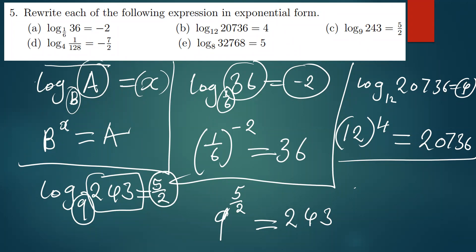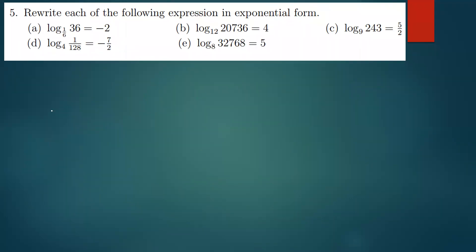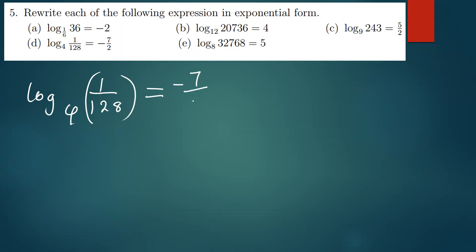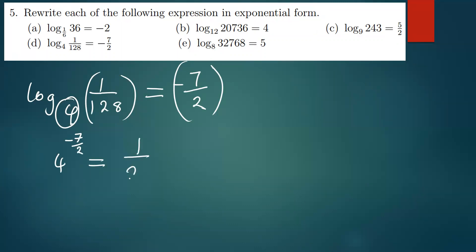Moving on to the second-to-last one, which is also very simple and straightforward. We have log of 1 over 128 with base 4 being equal to negative 7 over 2. Converting to exponential: the base remains 4, the power is negative 7 over 2, and this equals 1 over 128.